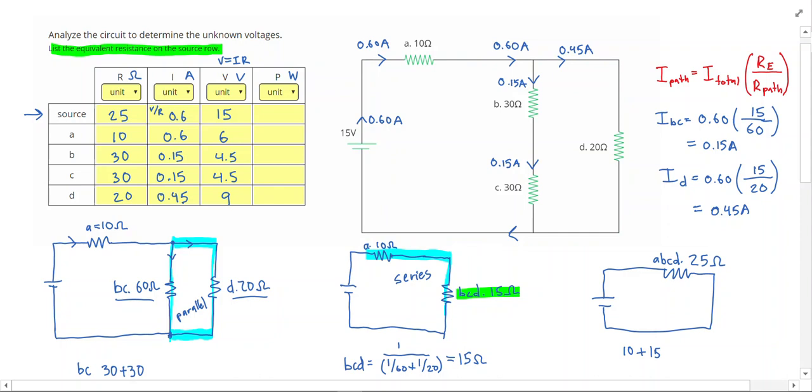Lastly we can just calculate the power by using the equation P equals I times V. To calculate the power, so 15 times 0.6 gives me that the battery is putting out 9 watts. That's 9 joules every second. 3.6 watts are dissipated at A. 0.675 watts are dissipated at B and C. 4.05 watts are dissipated at D.